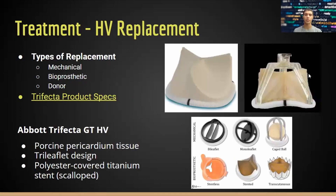Current treatment modalities used to address disease in a valve — in particular the aortic valve — include mechanical, bioprosthetic, and donor tissue options. For today we are modeling the Abbott Trifecta GT8 heart valve. You can also see in the image on the right other types of valves that preceded bioprosthetic valves, including the cage-ball, which is essentially a ball inside a cage.